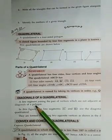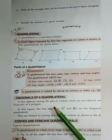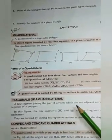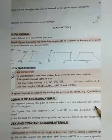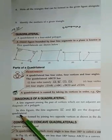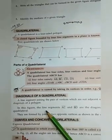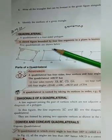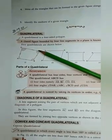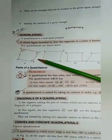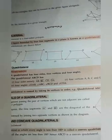Now, diagonals of a quadrilateral. A line segment joining the pair of vertices which are not adjacent is called a diagonal of a polygon. In this figure, the line segments AC and BD are the two diagonals.